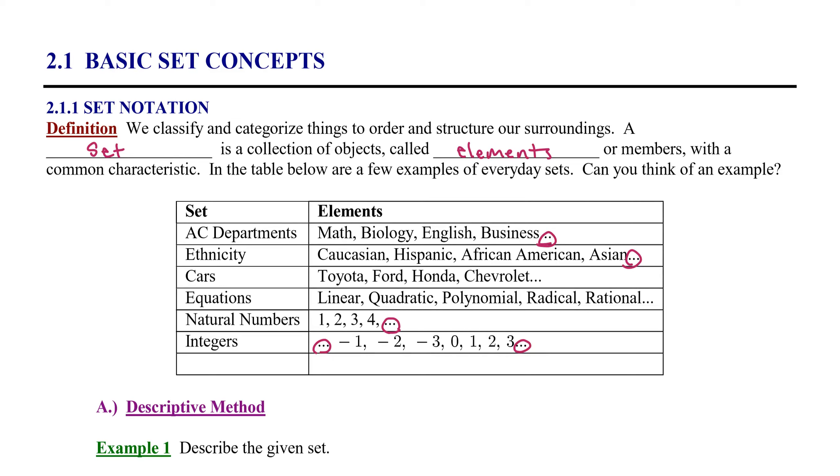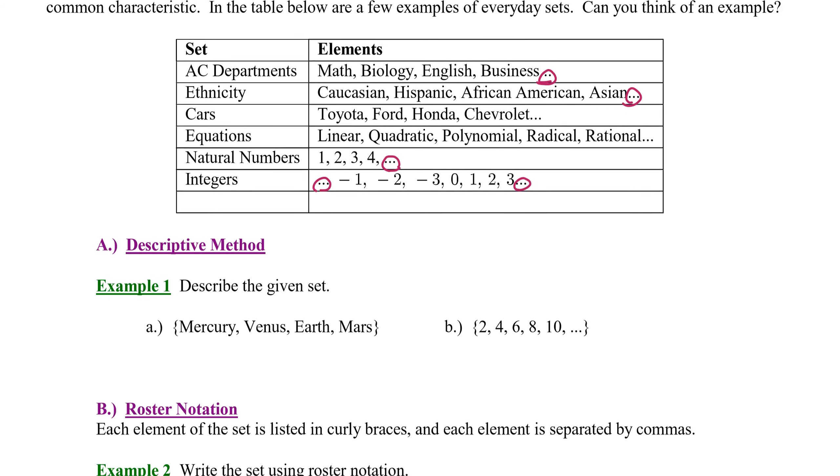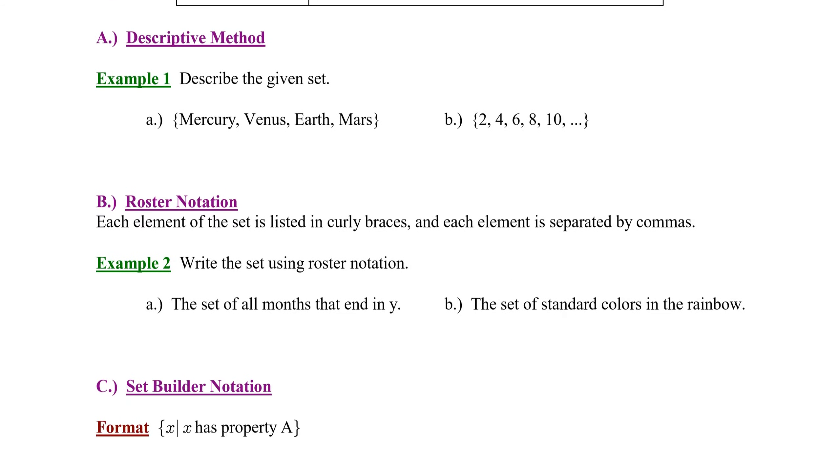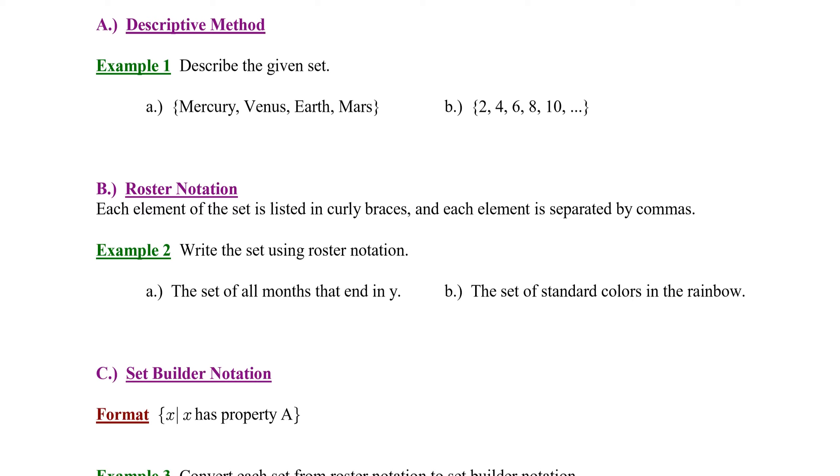Once we have a set defined, there are several different ways to denote a set. We're going to look at three methods for denoting or writing or expressing a set. The first is very basic. It's called the descriptive method.